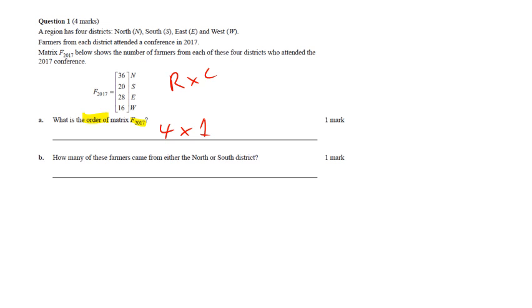How many of these farmers came from either the North or South? Well there's the North, there's the South, so it is 36 plus 20 equals 56 farmers.